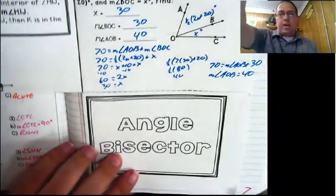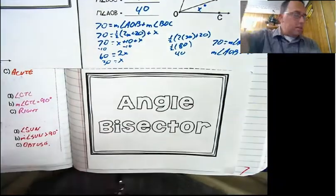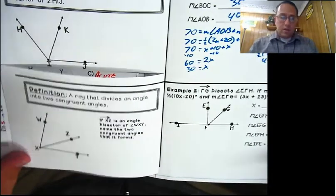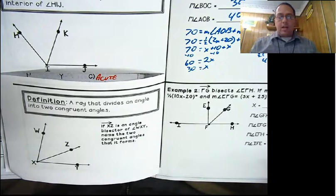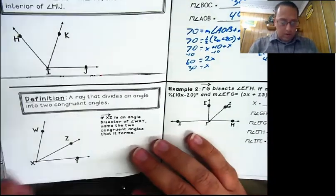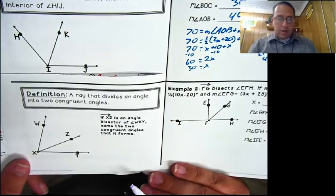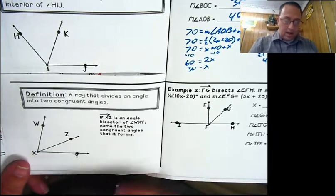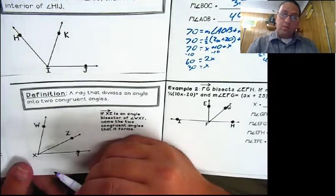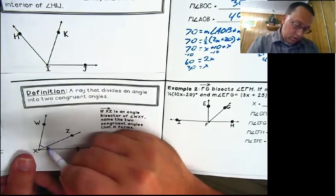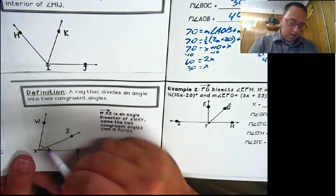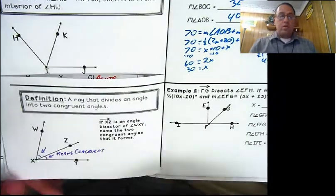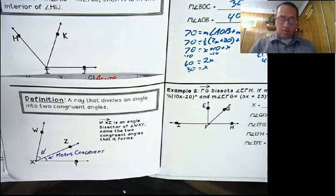One last thing: the angle bisector. This is just like the segment bisector, only with angles. It is a ray that divides an angle into two congruent angles. If XZ is an angle bisector, then angle WXZ is congruent to angle ZXY. The way we show congruent angles is with these little arcs - just like tick marks on segments, but for angles we use arcs.